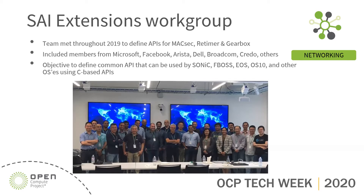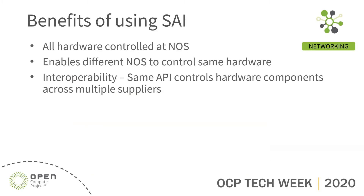The benefits of SAI are: first and most importantly, you're abstracting away from a particular vendor's SDK, so all the hardware is controlled at the network operating system level. You guarantee interoperability by having a standard API, and one of the main objectives is to not get locked into any particular vendor's API — because once you get locked in, it's really hard to switch hardware.